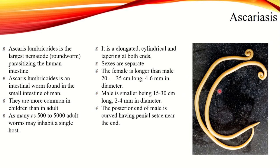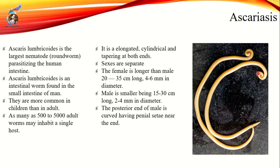The male is usually smaller than the female. The body is elongated and cylindrical with both ends tapering. Sexes are separate — they are not hermaphrodite; male and female are different. You can see this sexual dimorphism. The female is 20–35 cm long and 4–6 mm in diameter.